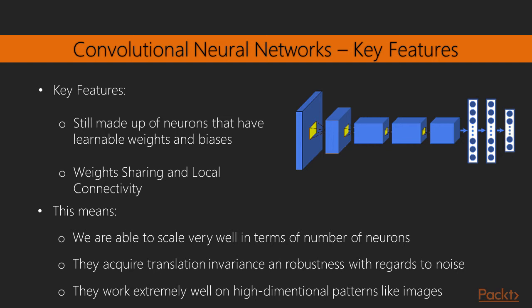That is, adding exactly the same values for some set of weights across some layers and also reducing the total number of connections so that a neuron is not connected to all the neurons in the previous layer. This actually means that we are now able to scale very well in terms of number of neurons, that our model now acquires translation invariance and robustness with regards to noise and other small variations in the input patterns, and also that these networks can work now extremely well on high dimensional patterns like images.